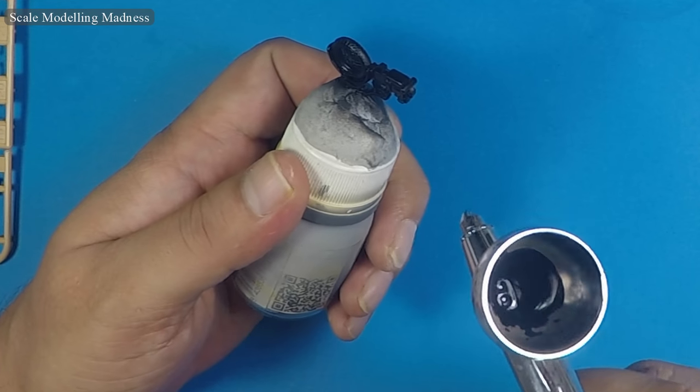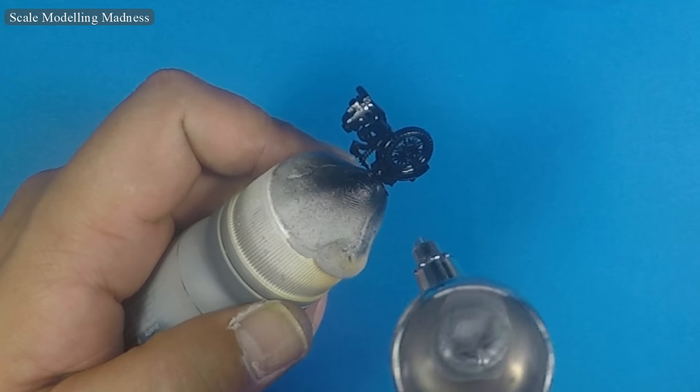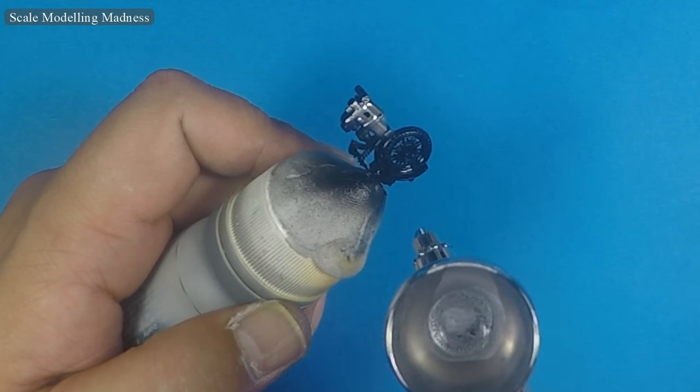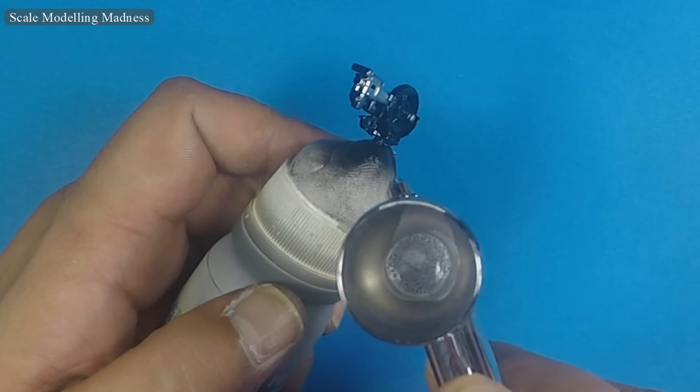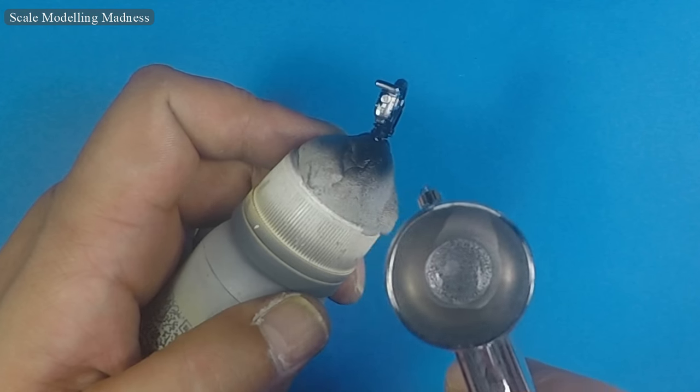A primer is important here as the next thing I paint is the engine with aluminum. Metallic paint, I feel, always turns out a little better if painted over a gloss black base.